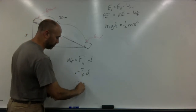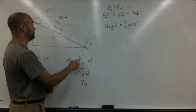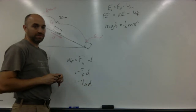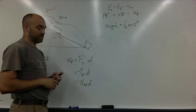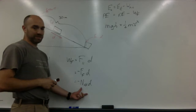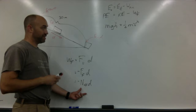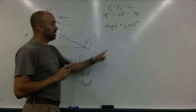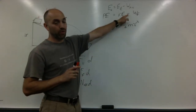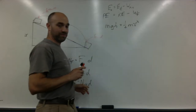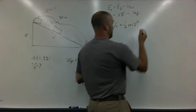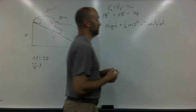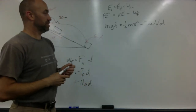The force of friction is normal force times mu, and the distance moved given in the problem is 30 meters. That negative sign there and this negative sign here — they both have to be there. So this is minus a negative, which becomes a positive.